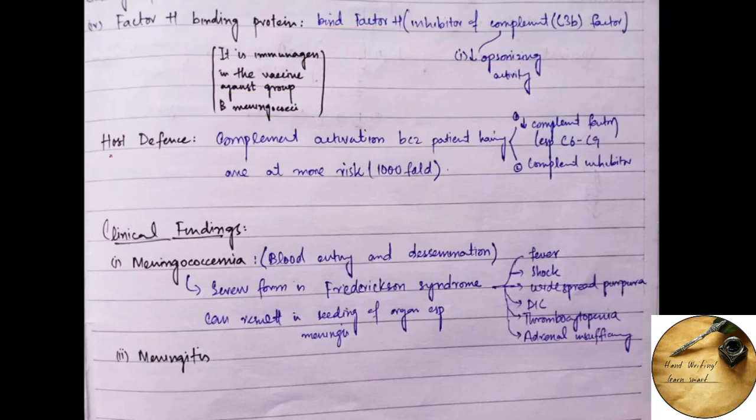Now coming towards the host defense. So complement activation is the main host defense against the Neisseria meningitidis. Patients having decreased complement factors, especially from C6 to C9 which are also called late acting complement factors, and those patients which are using complement inhibitor are at more risk for the infection than a normal person.